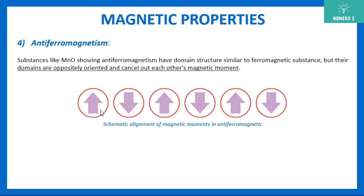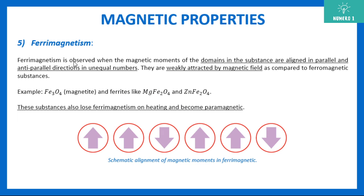Then, if these domains are arranged in unequal numbers, that substance is ferrimagnetic substance. Ferrimagnetic substances are weakly attracted by magnetic field. You can see here also, this is up, up, down, up, up, up, down. So you see 4 are facing upwards and 2 are facing downwards. So here, the number of facing upward is not equals to number of facing downwards. So this is your ferrimagnetic substance.